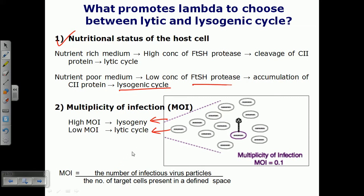If the total number of target cells in the defined space is very low, the phage will try to convert to the lysogenic cycle. But if phage particles are fewer than the host cells, they follow the lytic cycle. This is a survival strategy: if there are fewer bacteria and more phage, and they kill all the bacteria, they won't have any host cells left to survive. Phage always require a host cell, so they won't want to degrade all host cells. Only when there are adequate host cells will they kill via the lytic cycle.